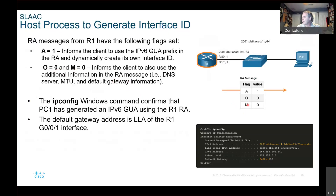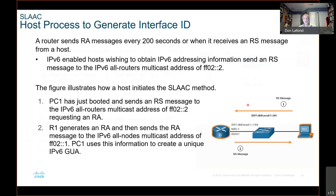Then you can go into your PC on the host and type ipconfig, and you can see that it has been given an IPv6 address that it created itself. We'll see in a minute how it did it, but the PowerPoint explains how it created it using its MAC address because it's on its own slide.